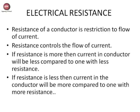Electrical resistance is resistance of a conductor, and it is a restriction to the flow of current. That is, simply, restriction to flow of current is electrical resistance. Resistance controls the flow of current. If resistance is more, the current in the conductor will be less compared to one with less resistance.